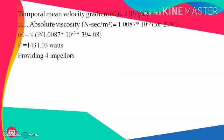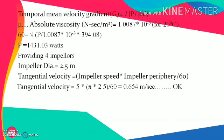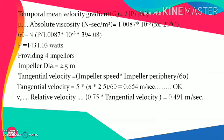We will provide four impellers, each with a diameter of 2.5 m. The tangential velocity = impeller speed × impeller periphery / 60 = 5 × π × 2.5 / 60 = 0.654 m/s at the tip of the blade. The relative velocity Vr = 0.75 × tangential velocity = 0.75 × 0.654 = 0.491 m/s.